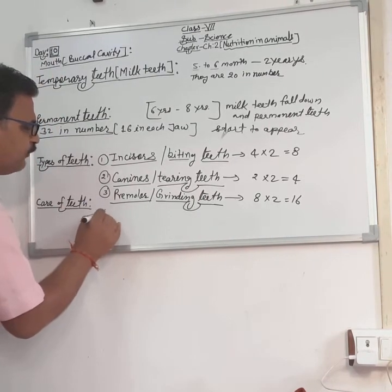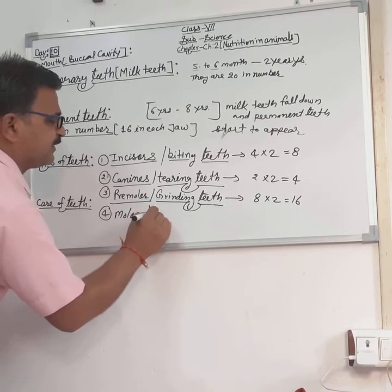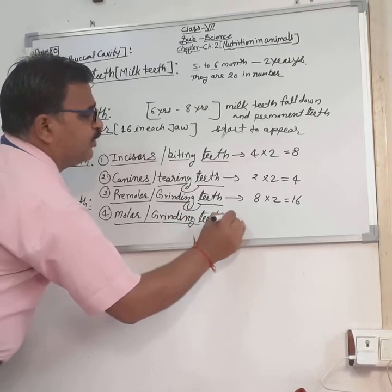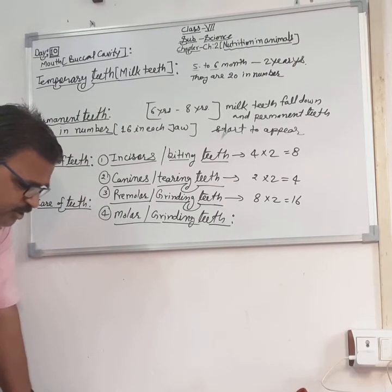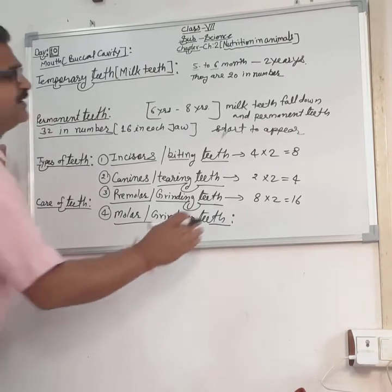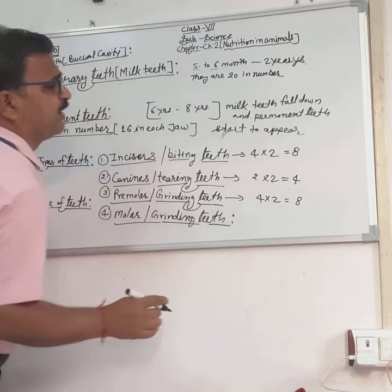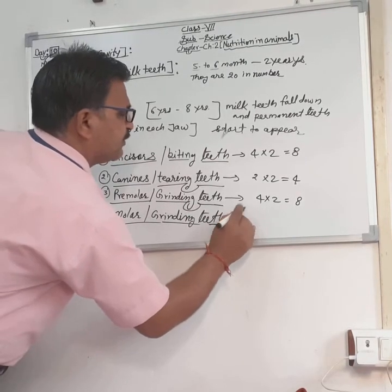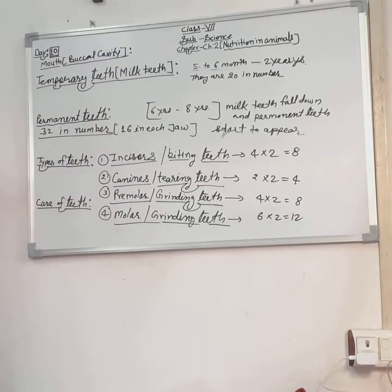The fourth type is molar teeth. Their name is also grinding teeth. Their function is also grinding. These are situated at the innermost part of the mouth. They are 12 in number — 6 in each jaw. So: incisors 8, canines 4, premolars 8, molars 12 — giving a total of 32 permanent teeth.